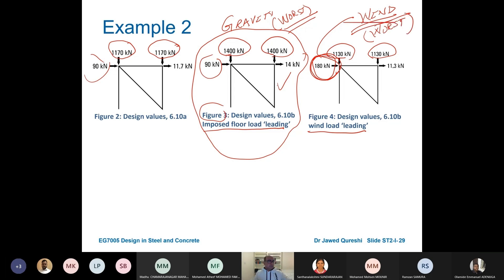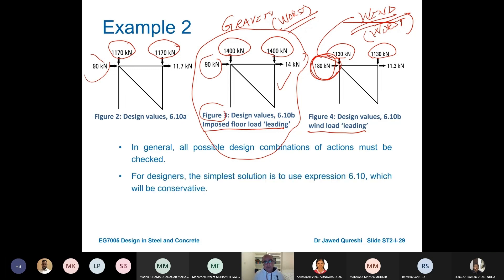This is my worst case scenario. The conclusion is that we have to check all the three possible combinations. The simplest form to use is 6.10 which means that 1.35 times Gk plus 1.5 times Qk which is the most common one across the world. The factors might be slightly different but the variations are still not the same. We need to multiply them with factors. The results will be a little bit conservative. For more economy use of 6.10a and b is beneficial. So most of the structural engineers in the UK they prefer to use the 6.10a and b because it gives economy.